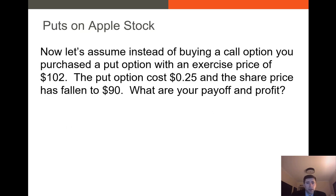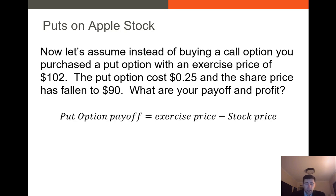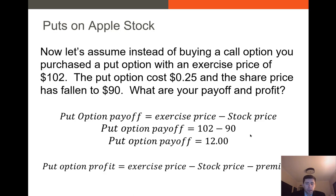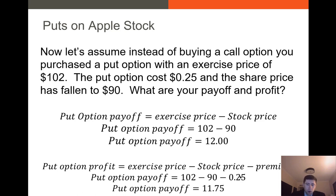Now let's assume that instead of buying a call option, you purchased a put option with an exercise price of $102. The put option costs $0.25 and the share price has fallen to $90. Your put option payoff is the exercise price minus the stock price: $102 minus $90 equals $12. Your profit is your payoff minus the premium: $102 minus $90 minus $0.25, giving a put option profit of $11.75. You are in the money here because the underlying stock price is well below the strike price.